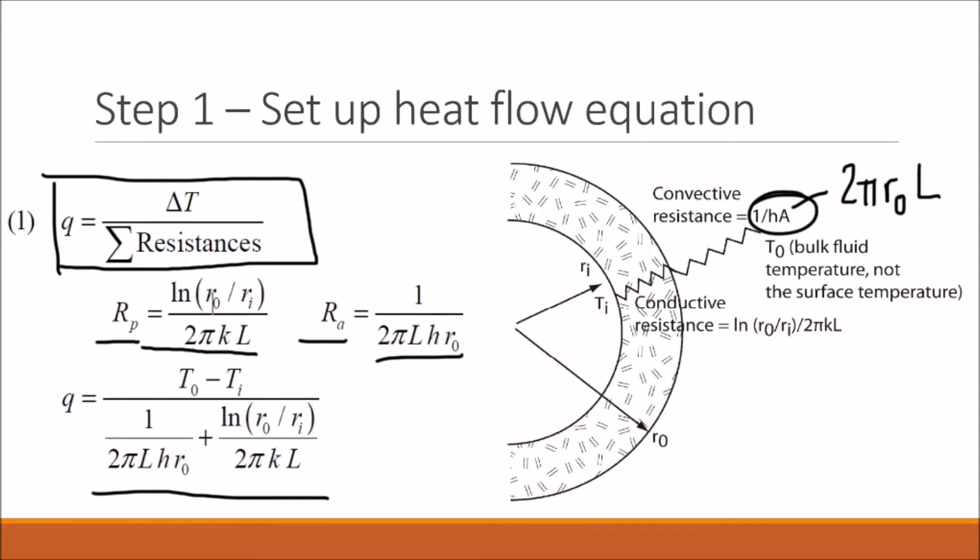To finish our heat flow equation, we need the difference in temperature between the bulk fluid and the inner surface, which is T₀ minus Tᵢ. With that, we have a complete equation for the magnitude of the heat flow through the pipe.